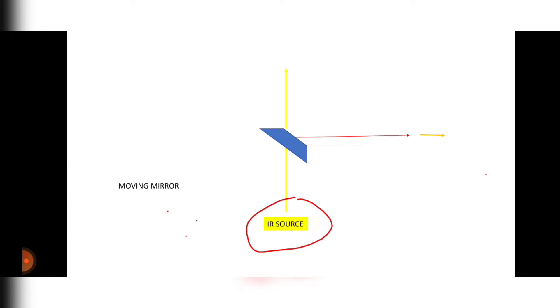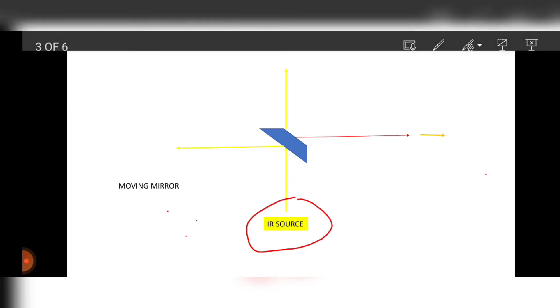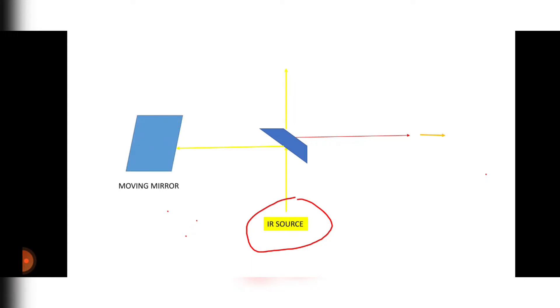This divider will divide the light in two equal parts. One will move toward the moving mirror and the other light will move toward the stationary mirror.